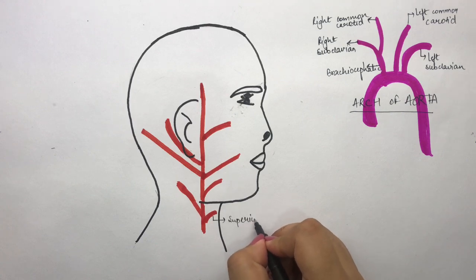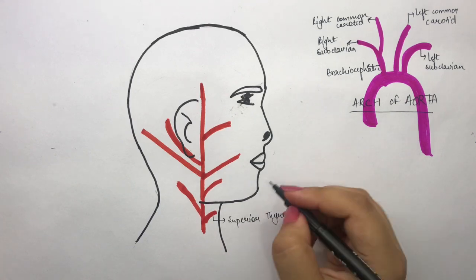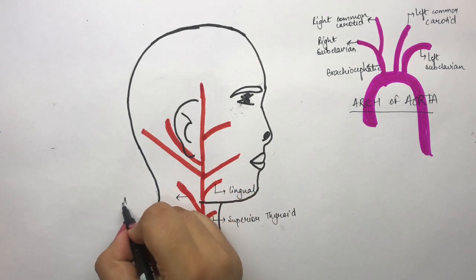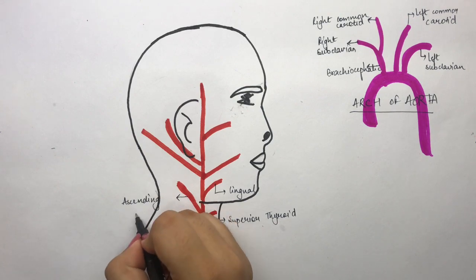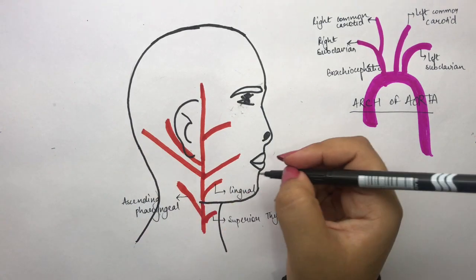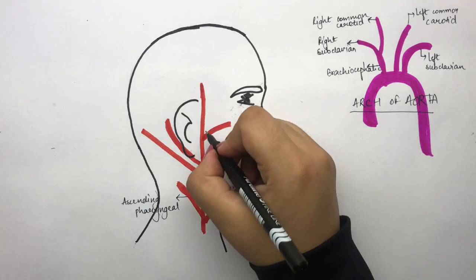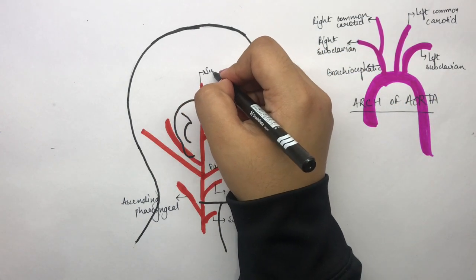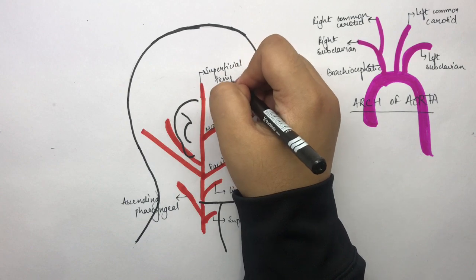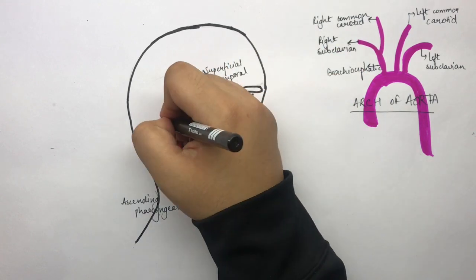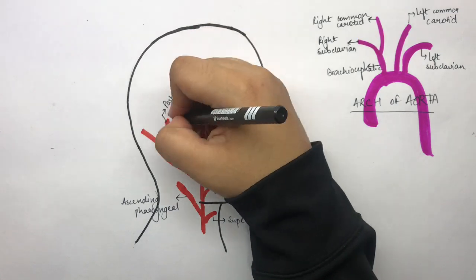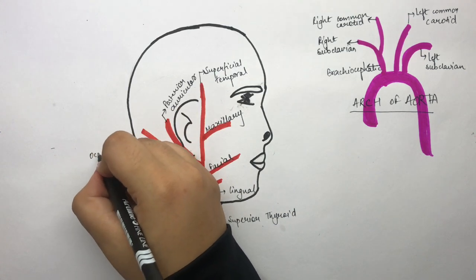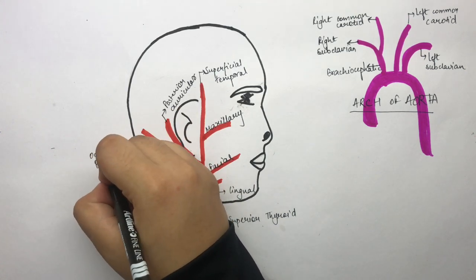Now let's name them: the superior thyroid branch, the lingual branch, the ascending pharyngeal branch, the facial branch which goes to the face, the maxillary branch, the superficial temporal branch which is a terminal branch, the posterior auricular branch which goes behind the ear, and the occipital branch which goes posteriorly.